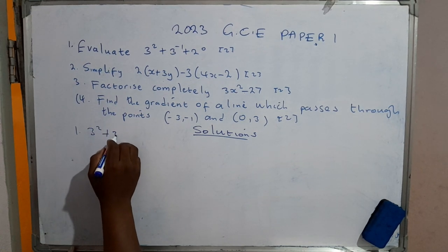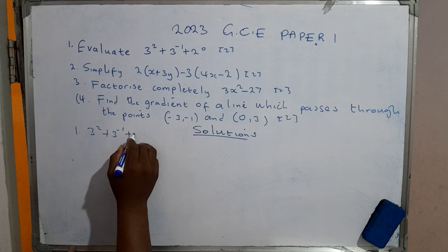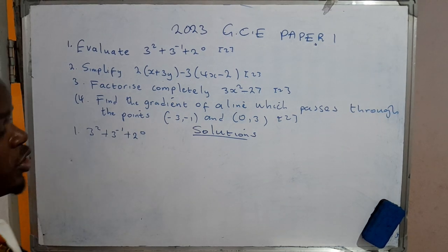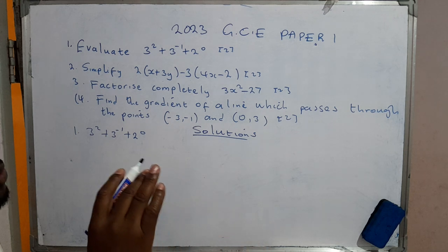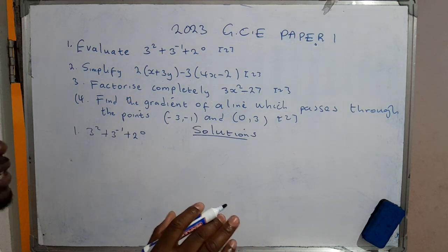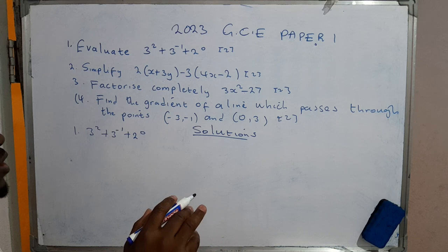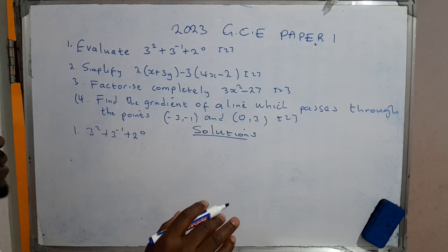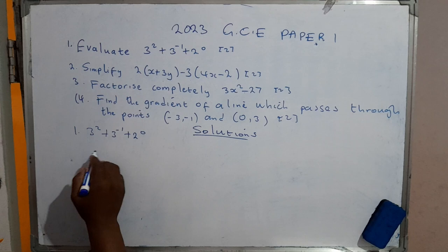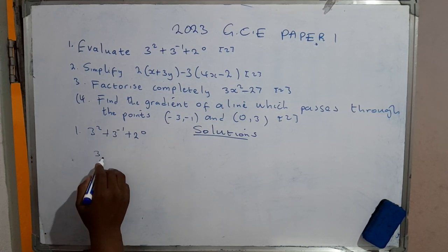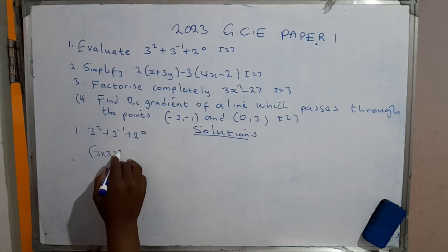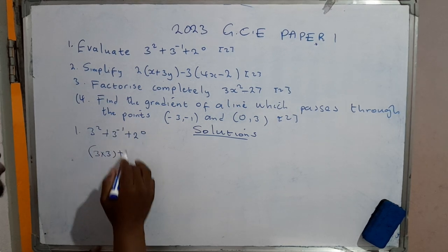Number one: 3² + 3⁻¹ + 2⁰. What you do is you apply the laws of indices. When you have any term raised to the negative power, you need to make sure that you change that negative power into a positive power.